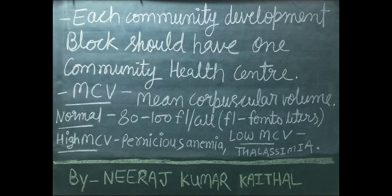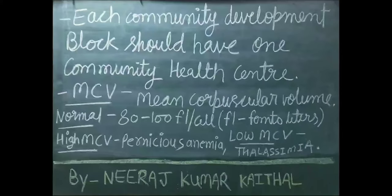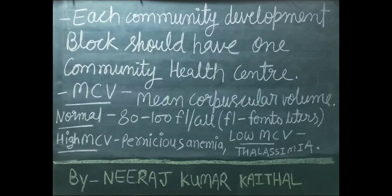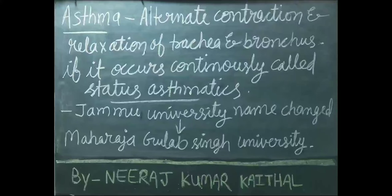Each Community Development Block should have one Community Health Center. Har Community Development Block par ek CHC ya Community Health Center hona chahiye. MCV ka full form hai Mean Corpuscular Volume. Normal level hota hai 80-100 femtoliters per cell. Yadi MCV ka level badh jaye toh patient ko pernicious anemia hai. Yadi MCV ka level kam ho jaye toh patient thalassemia se grasit hai.